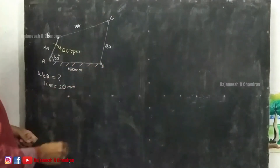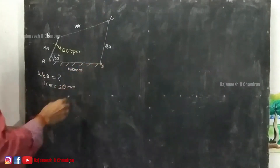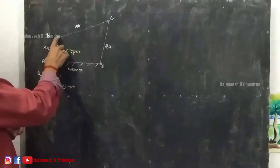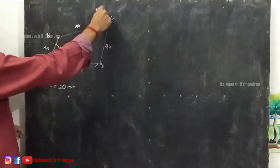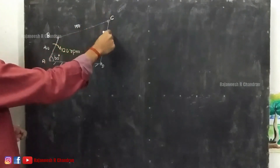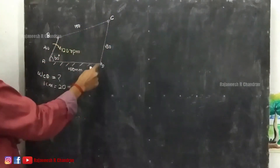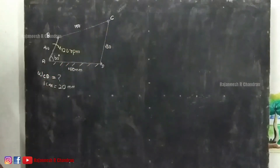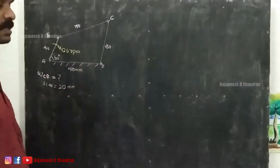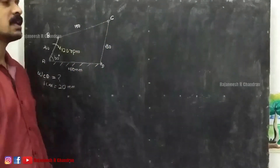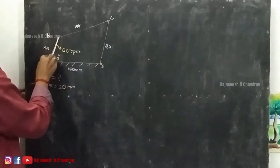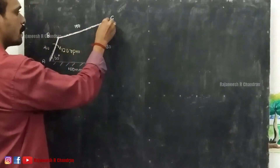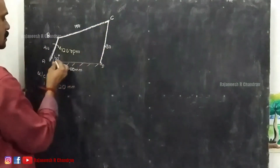Draw the horizontal fixed link AD. At an angle of 60 degrees, draw AB. From B, draw an arc of 150 mm (BC), and from D, draw an arc of 80 mm (CD) to intersect the previous arc. So we can construct the mechanism A-B-C-D. The position diagram of the mechanism is now complete.